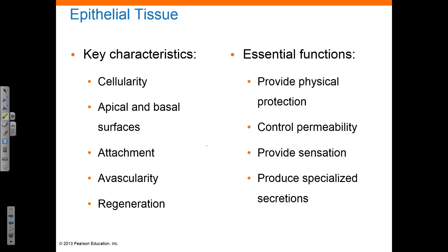The epithelial tissue has many important functions including providing physical protection from pathogens, chemicals, abrasions, and dehydration. It controls permeability — anything that enters or leaves the body has to cross the epithelium, so by controlling permeability, the epithelial tissue can determine what gets in and what gets out. It provides sensations through receptors that relay information to the nervous system. The gland cells produce specialized secretions either onto the epithelial surface, known as exocrine secretions, or into the tissue fluid or blood, known as endocrine secretions.